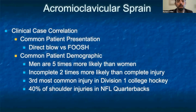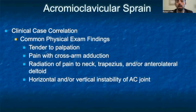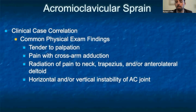The third common condition we will discuss is acromioclavicular sprains, which often occur secondary to a direct blow to the upper shoulder or a fall on an outstretched hand. On physical exam, you may note tenderness to palpation over the AC joint, clavicle, or shoulder region. The patient may have pain with cross-arm adduction, and the pain may radiate up the neck, trapezius, and/or anterolateral deltoid. You may also notice horizontal and/or vertical instability of the AC joint.